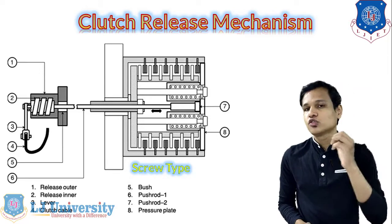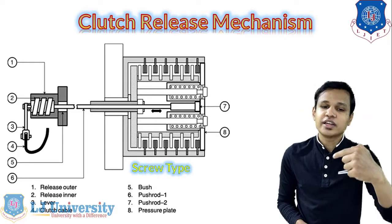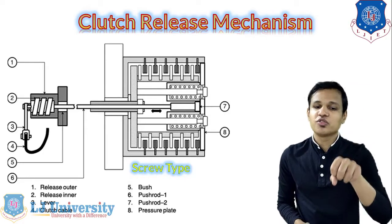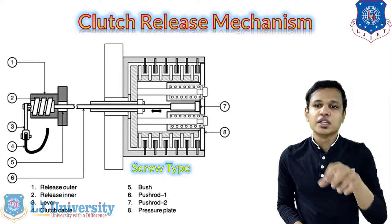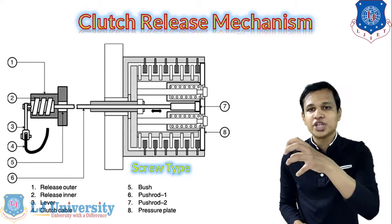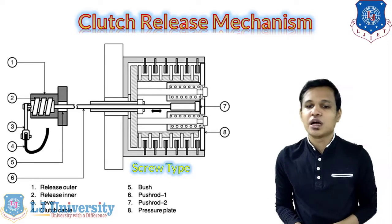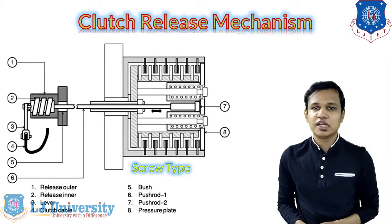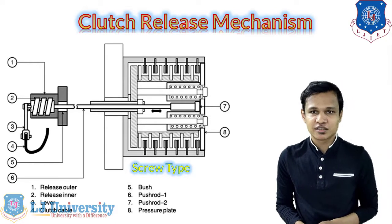In the screw type release mechanism, one screw is provided — a release outer and a release inner. As shown in the figure, in the release inner, one screw is provided. When we operate the clutch lever, the clutch cable connected to it will be tensioned. That tension in the cable will push out the screw, and as the screw is pushed out, the pressure plate will be compressed with the help of the diaphragm spring. The multi-plate clutch is used in this example as it is widely used in two-wheeler vehicles.